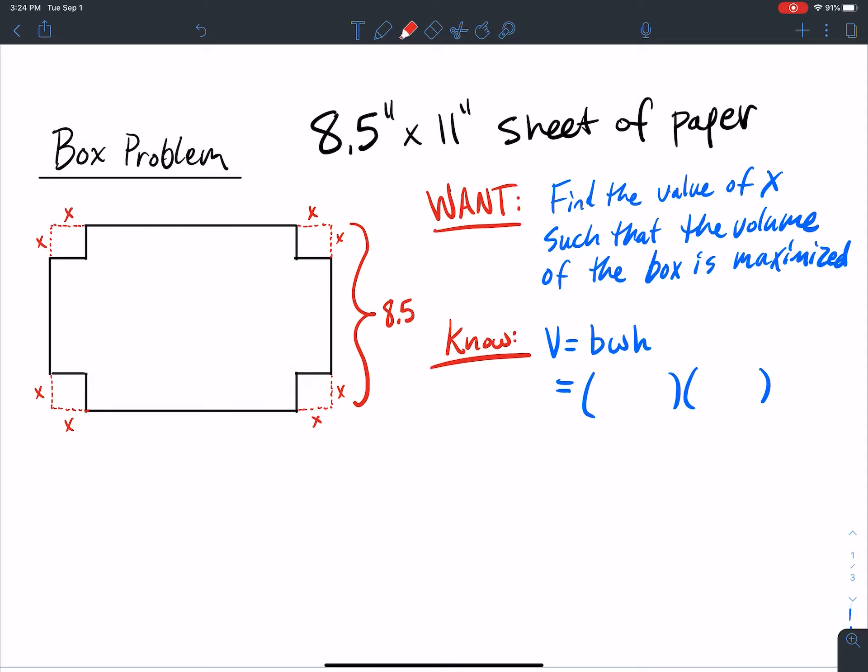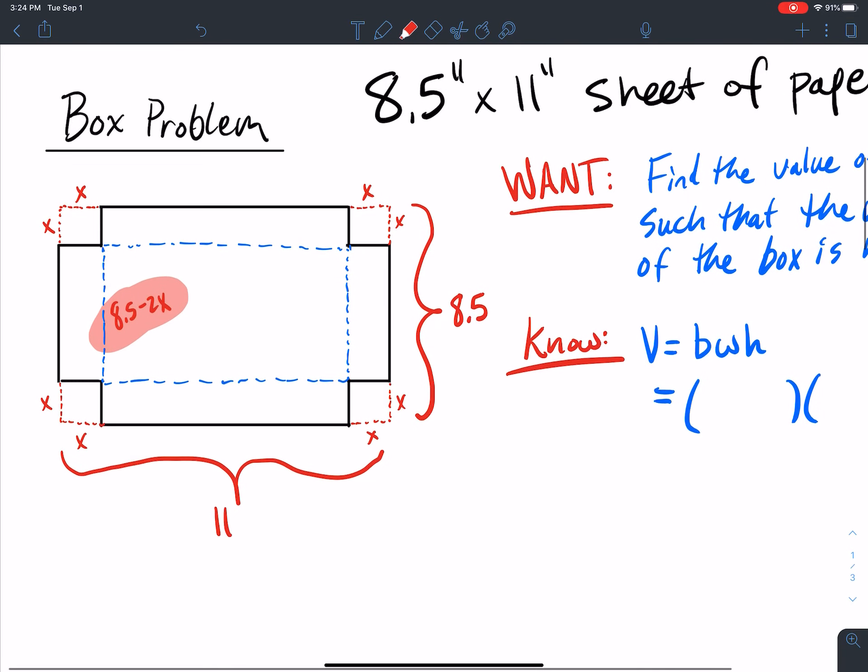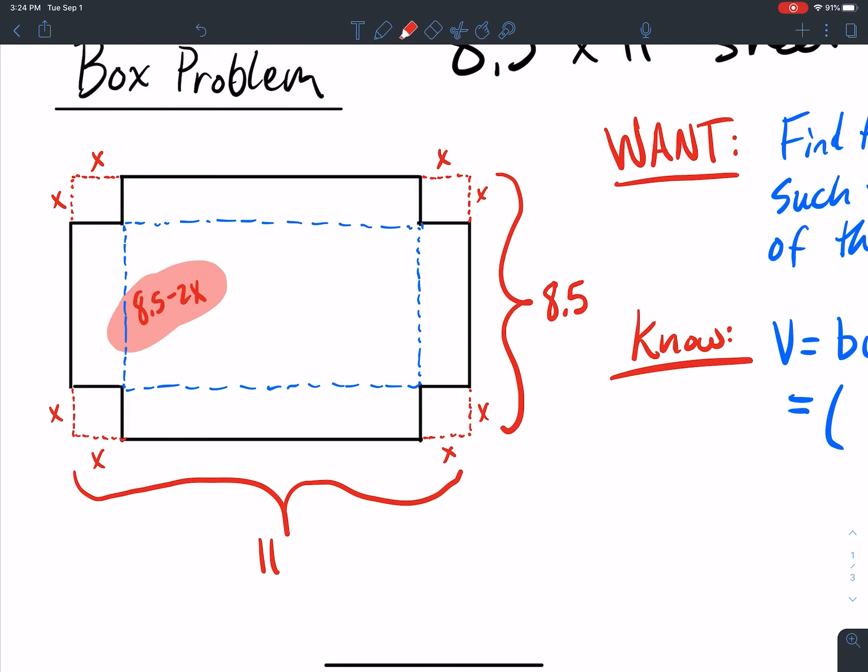It's an 8.5 by 11 sheet of paper. The entire length here is 8.5 and the entire length here is 8.5. The only problem is we don't have the entire length there. How do we figure out what that length in here is? Because it's not 8.5 inches, it's a little bit less. I have an x amount here and an x amount here, so I need to subtract away x minus x. So that's 8.5 minus 2x is how long this side is right here.